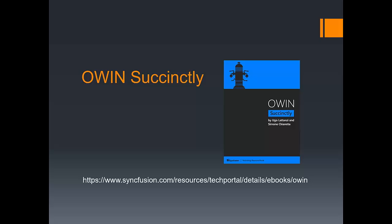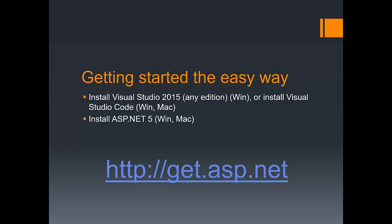Let's see how to get started with ASP.NET 5. We have two ways to install it: an easy way and a more complicated way. The easy way works on Windows and Mac and boils down to installing Visual Studio 2015 — any edition, including the free Community edition — or on Mac, Visual Studio Code. If you install either of those, you get everything you need. On top of that, you install ASP.NET 5 from the package available at get.asp.net, which works on both Windows and Mac.